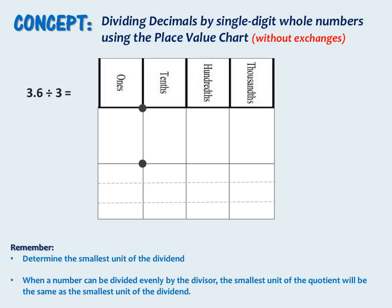Now we will use the place value chart to divide 3 and 6 tenths by 3. First we will build our dividend in the top row of the place value chart — we have 3 ones and 6 tenths. I've already divided the bottom portion of our place value chart into 3 sections to represent our divisor.